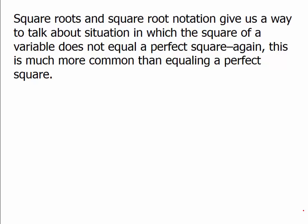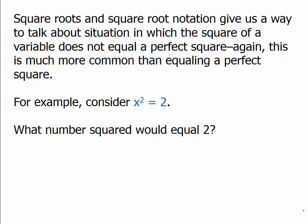This is much more common than equaling a perfect square. Consider x squared equals 2. Well, 2 is not a perfect square. There is no integer we could square to get 2. If we want to solve for x, x could have two values. There could be something negative that we square to get the positive, or there could be something positive we square to get the value.